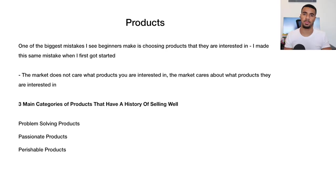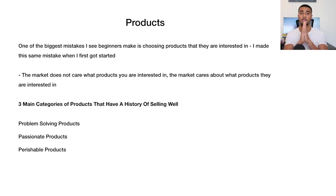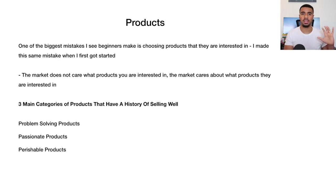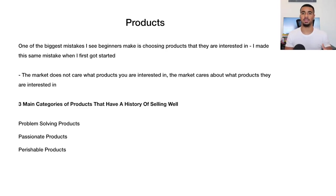Now for products — one of the biggest things in dropshipping or e-commerce overall. People do seem to make a lot of the same mistakes when it comes to finding what products to sell. One of the biggest mistakes is going after products that you personally are interested in. I can attest to this myself — when I first got started I decided, because I'm into fitness and working out, why not choose products around the fitness space and market to people also interested in fitness. I thought because I liked these products other people would too — and I learned the hard way that's not how it works.